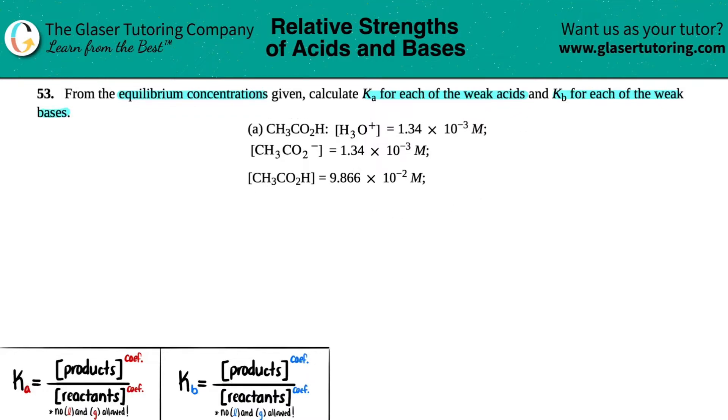So in this case, they told us that we're starting off with CH3CO2H, and they told us that it has an H3O plus concentration, a CH3CO2 minus concentration, and then the CH3CO2H concentration. So the first thing is we have to figure out whether we're going to find a Ka or a Kb, and the answer arises in what you produce.